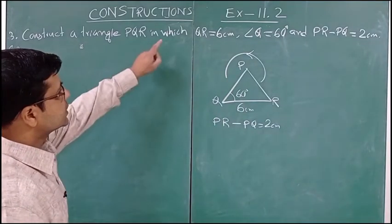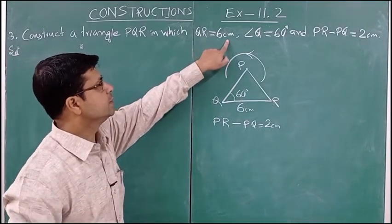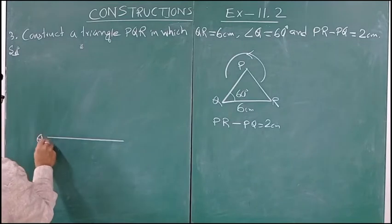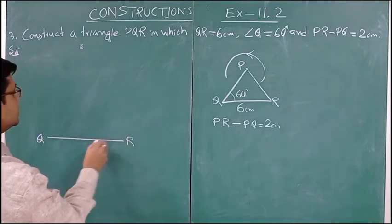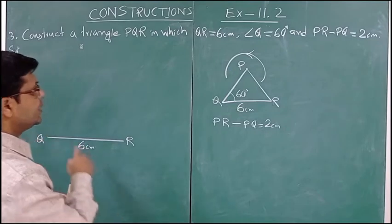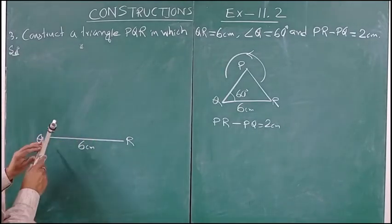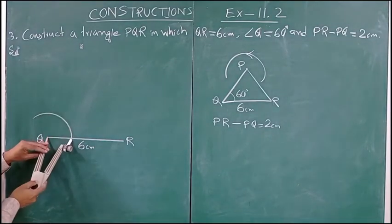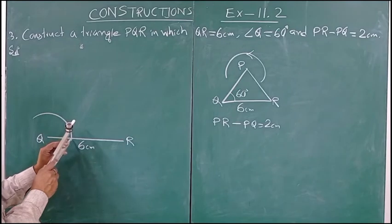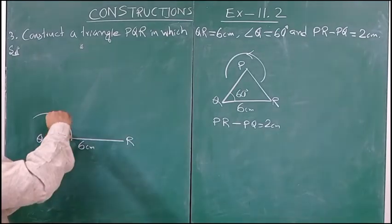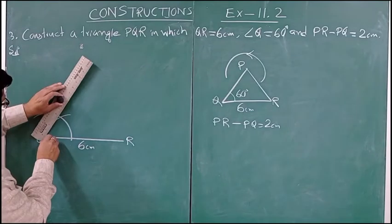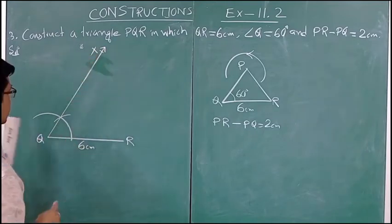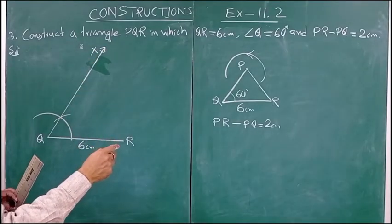Let us start the construction. First we shall draw QR equal to 6 centimeters. This is QR — 6 centimeter. Now angle Q is 60 degree; let us draw it. We take the compass, put the compass at Q, draw an arc, then without changing the radius draw another arc — this gives 60 degree. Let us join it and produce it; suppose this line is X.